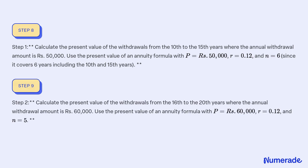Step 2: Calculate the present value of the withdrawals from the 16th to the 20th year, where the annual withdrawal amount is Rs 60,000. Use the present value of an annuity formula with P = Rs 60,000, R = 0.12, and N = 5.